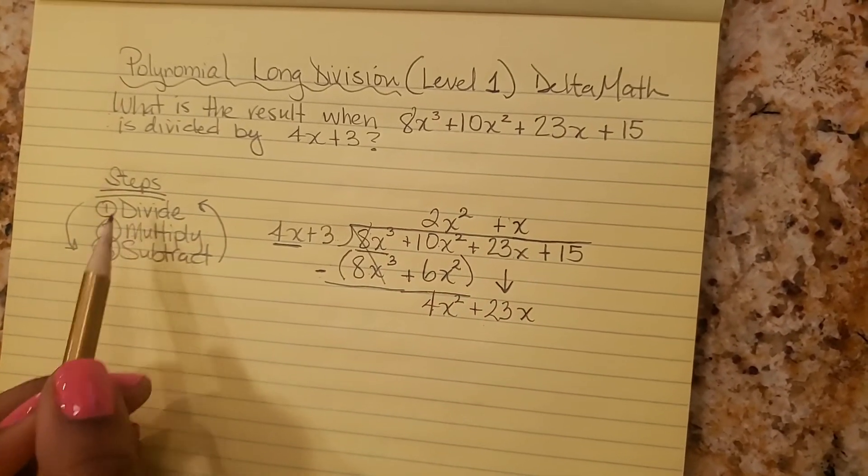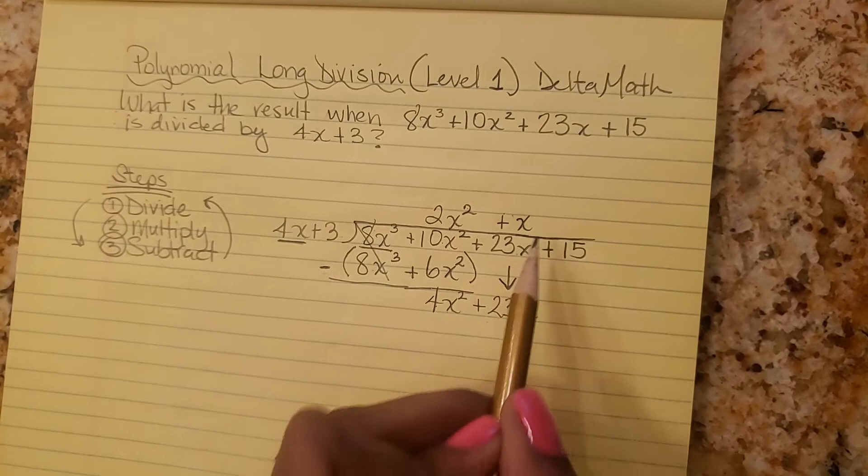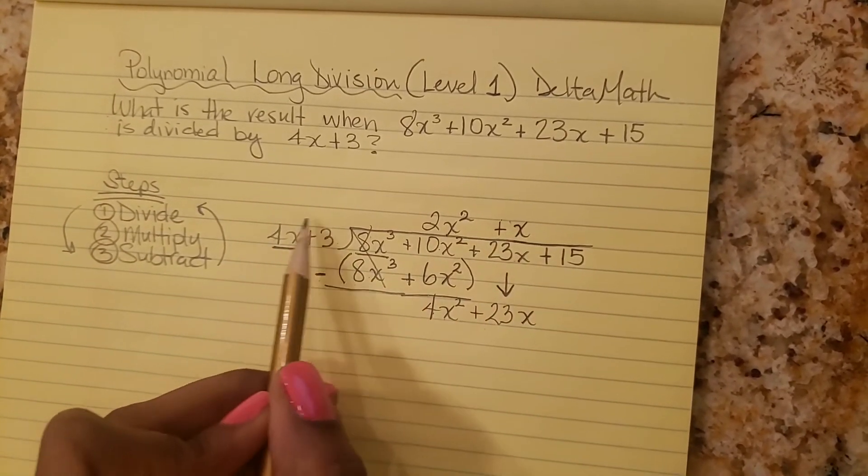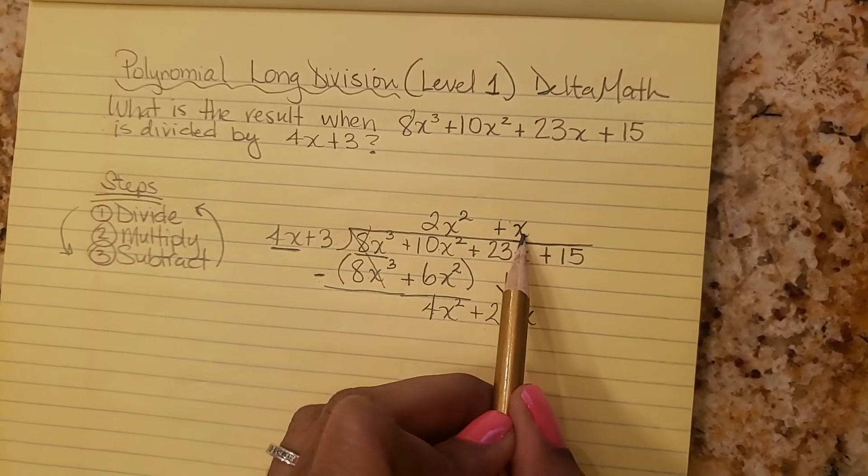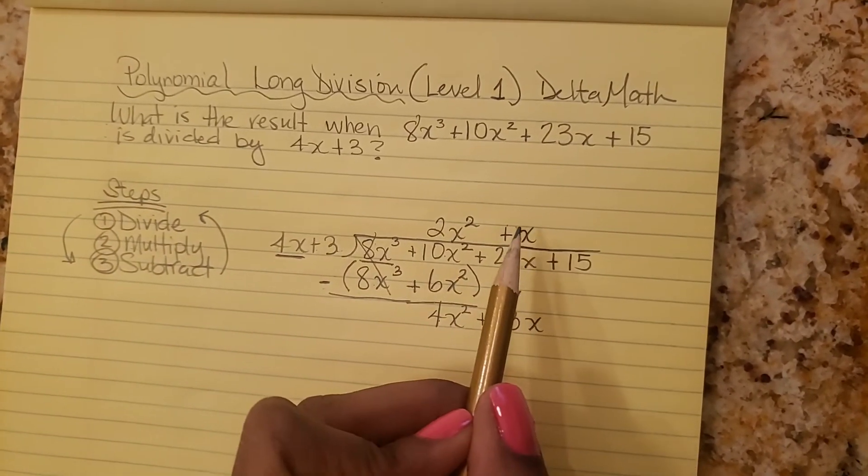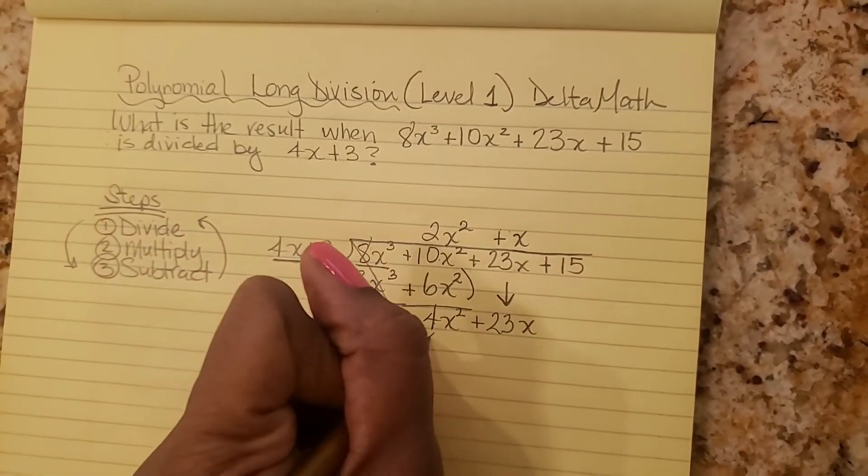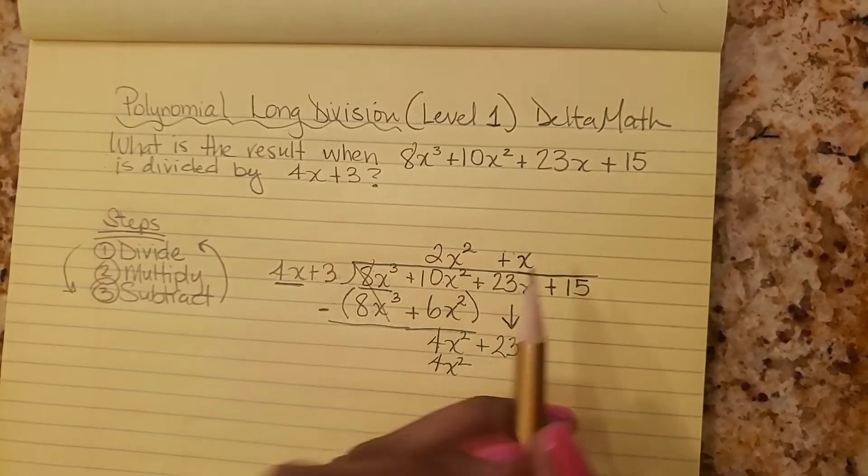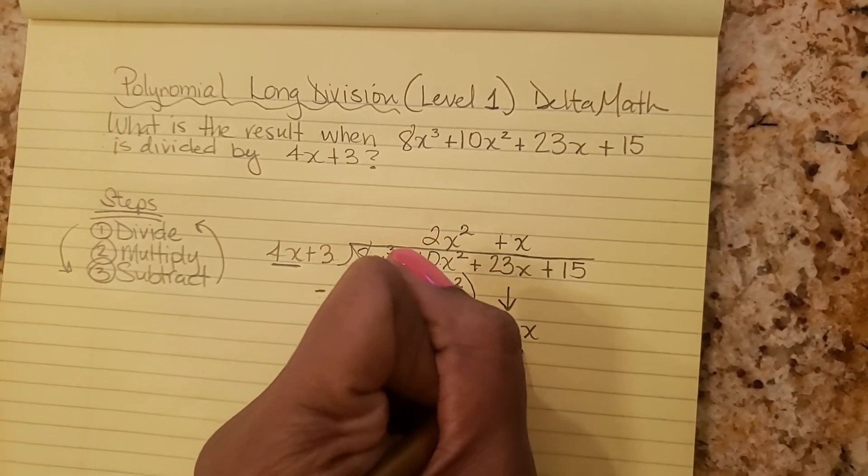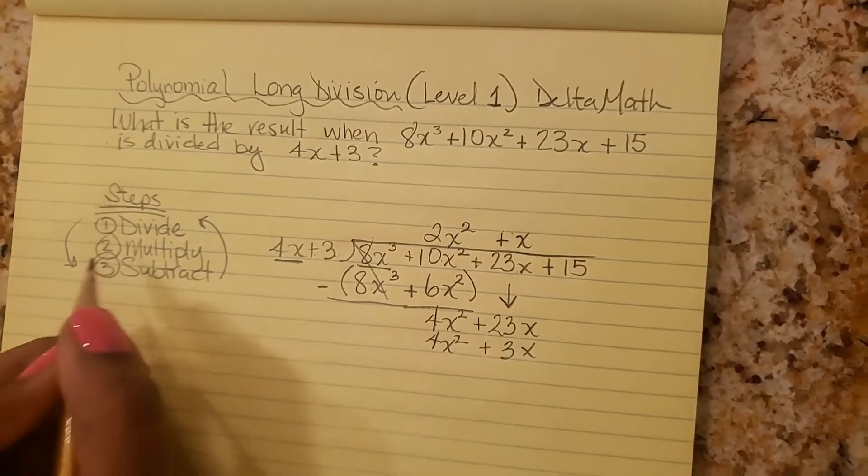And then the next step after you divide is to multiply. So we're going to multiply this x times this whole thing, x times 4x plus 3. So x times 4x is 4x squared, x times 3 plus 3x. And then we subtract.